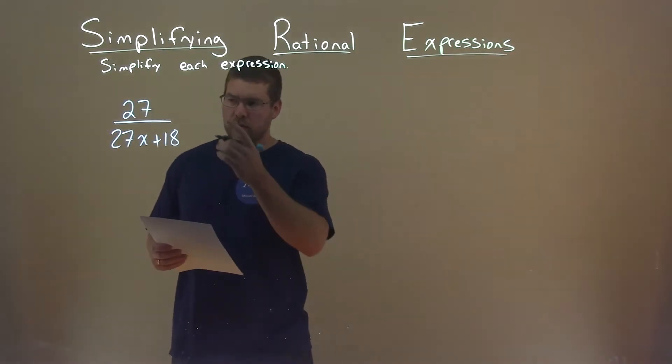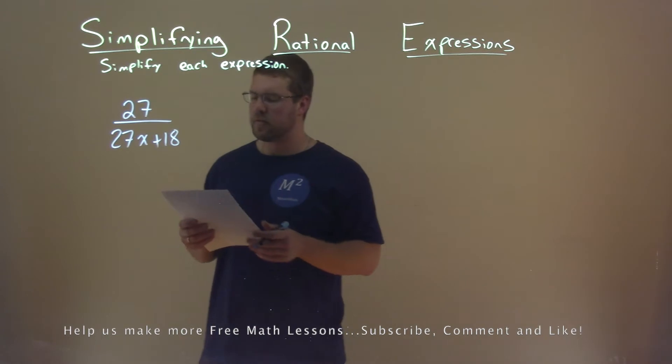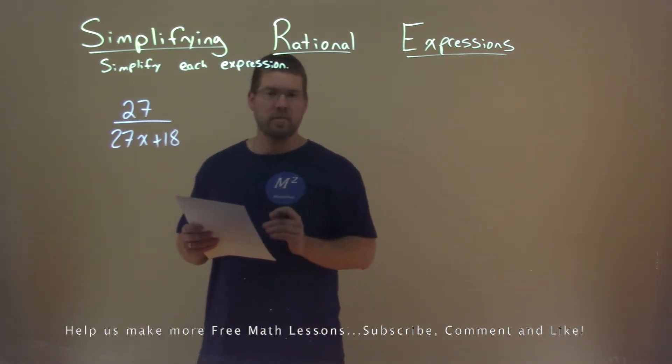We're given this problem right here, 27 over 27x plus 18, and we want to simplify this expression.